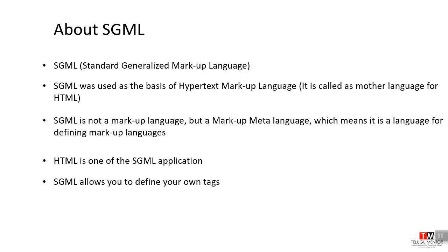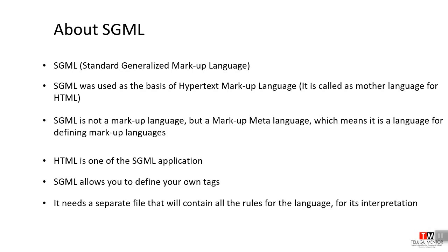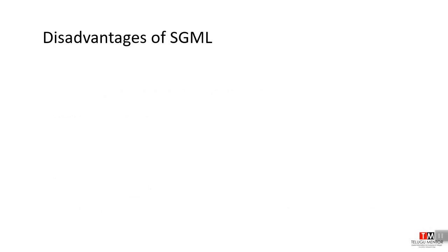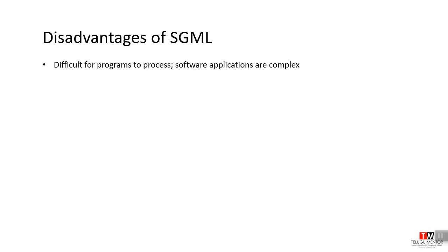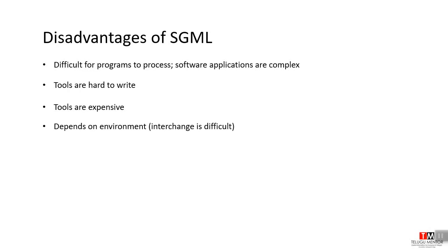However, SGML is a complex language. It needs a separate file that will contain all the rules for the language and its interpretation. Disadvantages include: it is difficult for programs to process, software applications are complex, tools are hard to write, coding is difficult and expensive, it depends on the environment, and interchange is difficult.